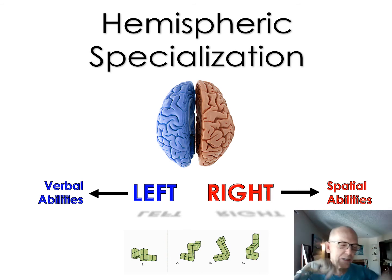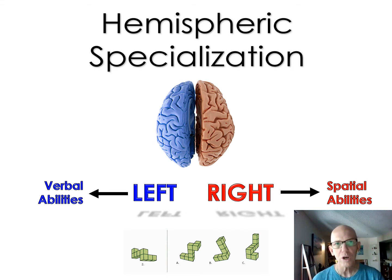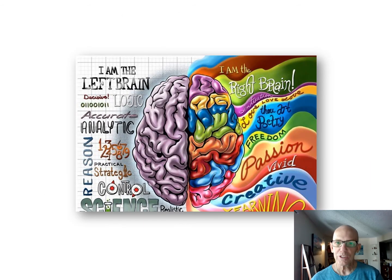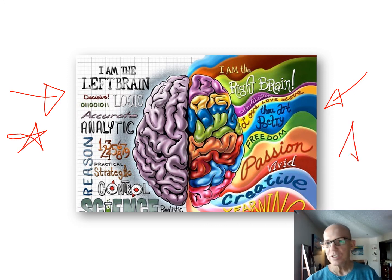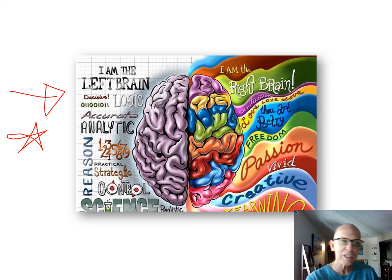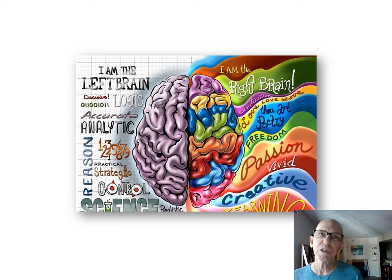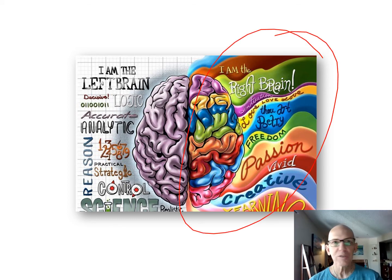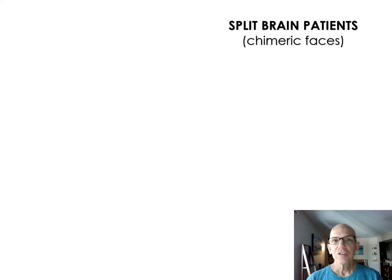Spatial ability includes things like rotating objects in three-dimensional space — even simple games like Tetris require that. There are puzzles that aren't really verbal but require you to understand things spatially in your mind. If you're in class I'd go off on this, but play to your strengths — if verbal is your strength, lean into that, and if spatial is your strength, lean into that instead.